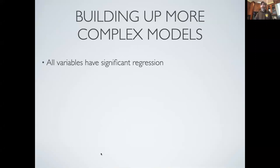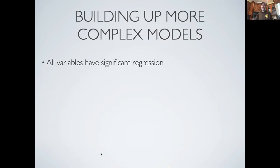Where we left off from our univariate regressions — our models that only had one x at a time — was that all of them were significant. If some of them came back as not significant, we would be pretty hesitant to continue to include them in more complex models unless we had some sort of exploratory analysis suggesting that the reason they weren't significant was because of some weird interaction with another variable we'd need to account for later.